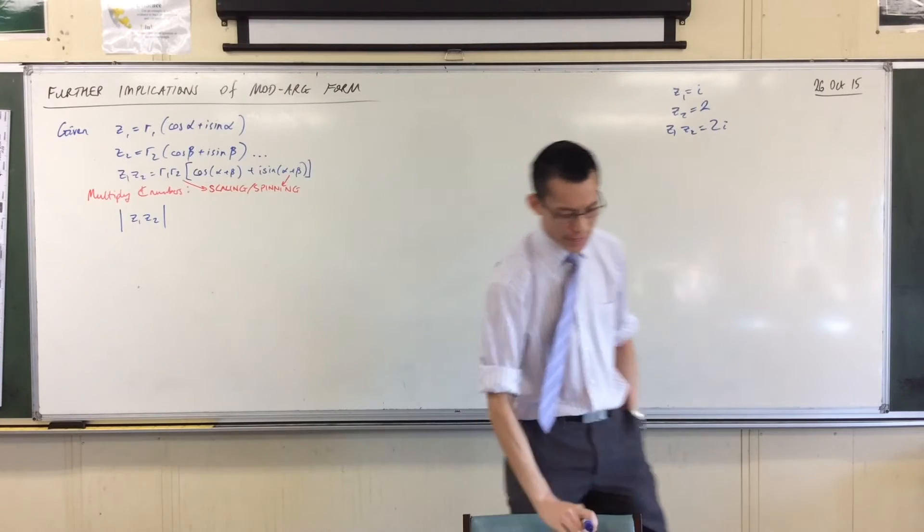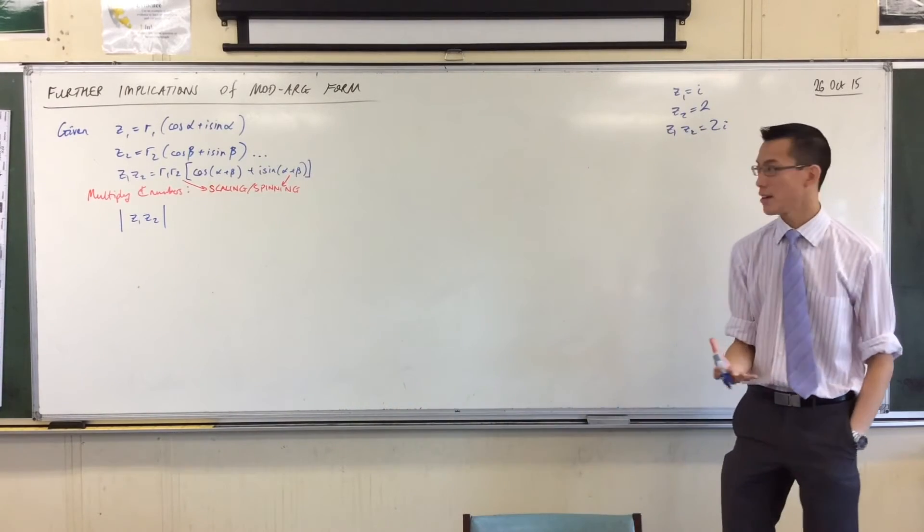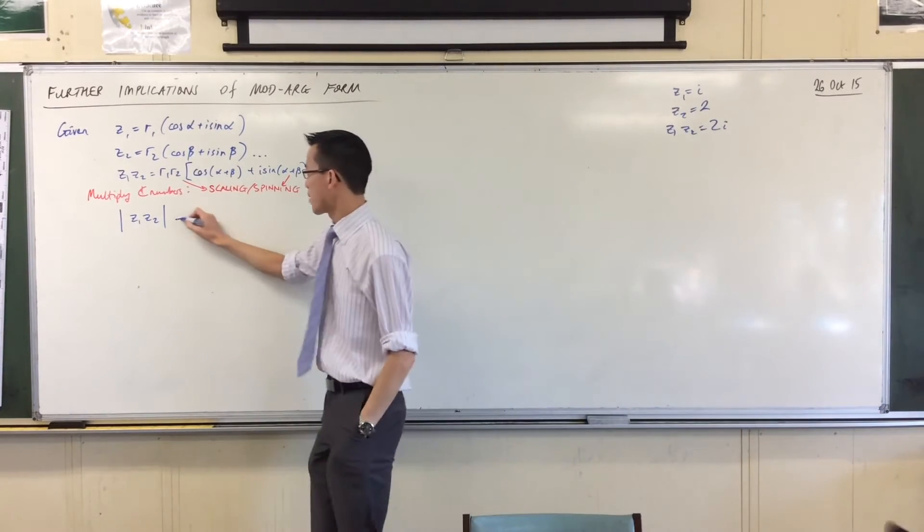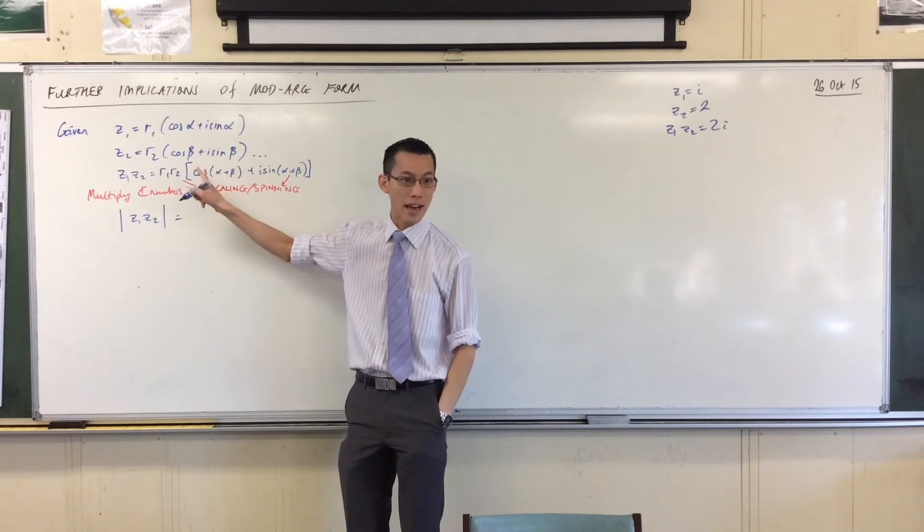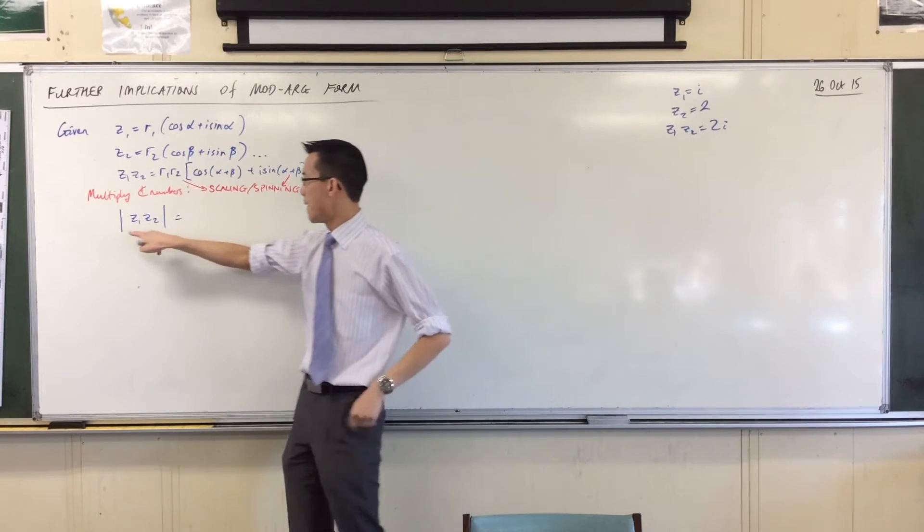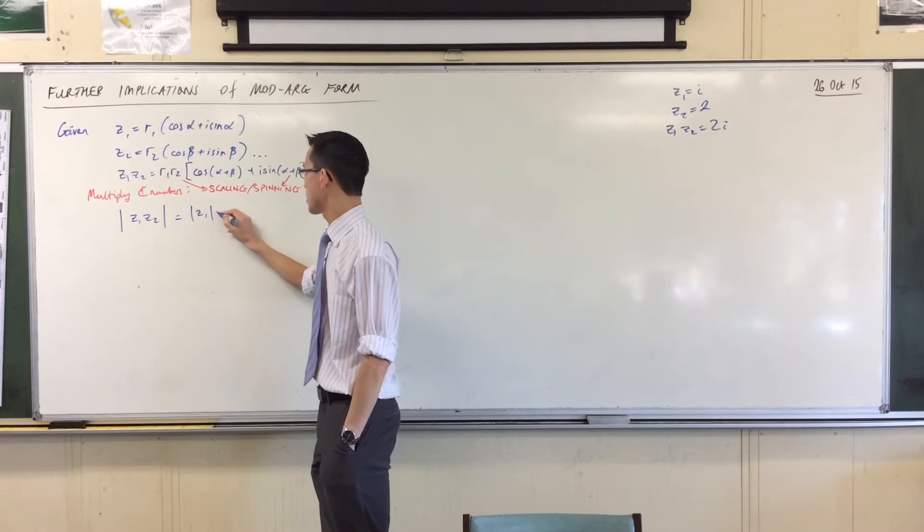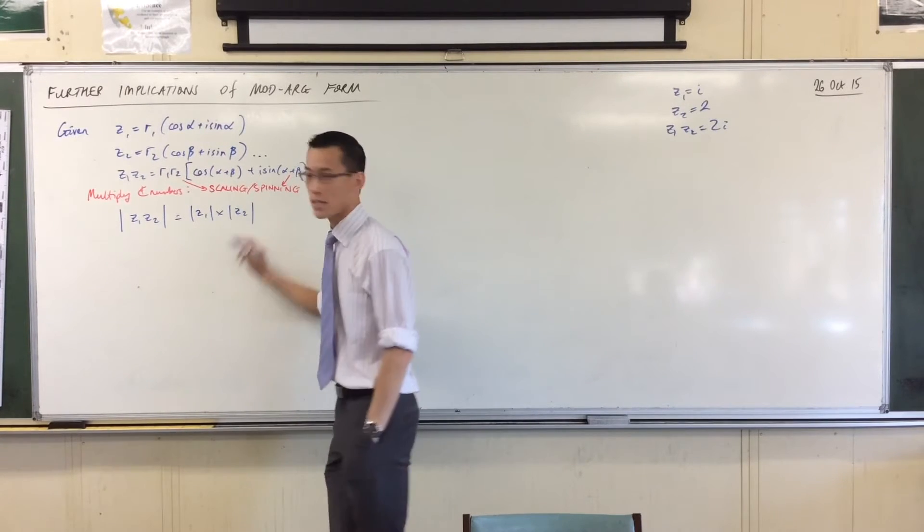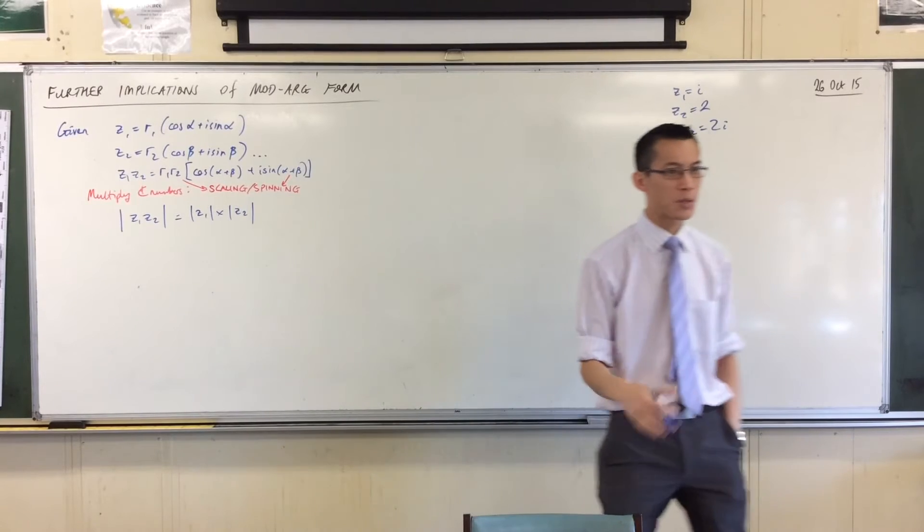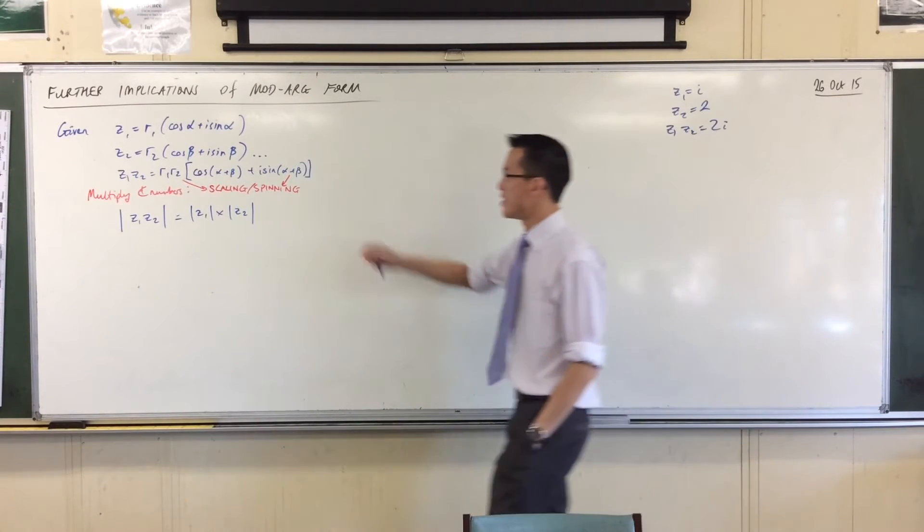If I already have the product worked out for me, then based on the fact that I multiply moduli, the modulus of this is clearly the modulus of this times the modulus of this just by itself.